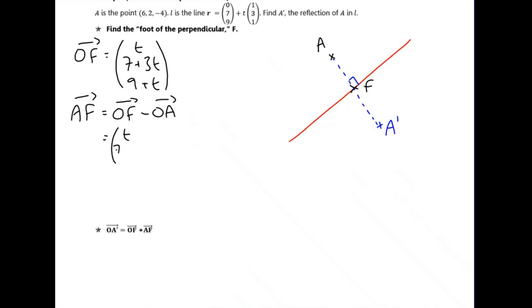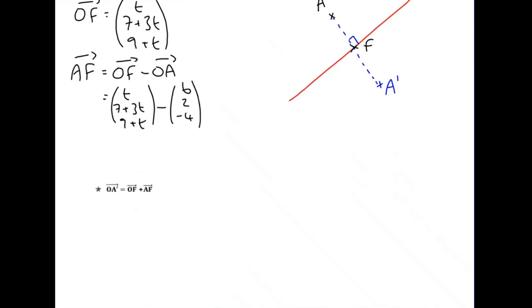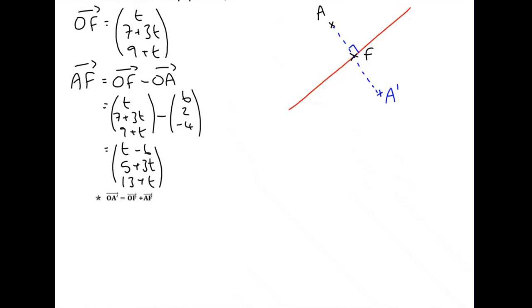Vector AF equals F minus A: that's (T, seven plus three·T, nine plus T) minus OA which is (6, 2, minus 4). That gives us (T minus 6, five plus three·T, thirteen plus T). This is the vector A to F.